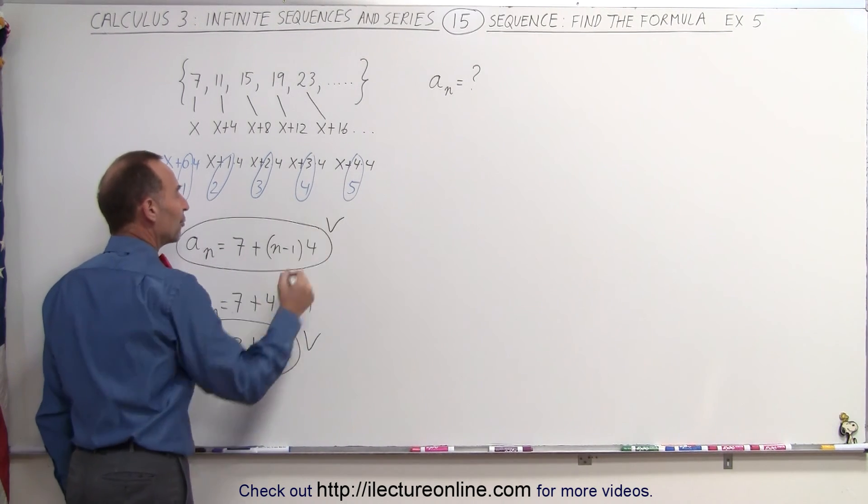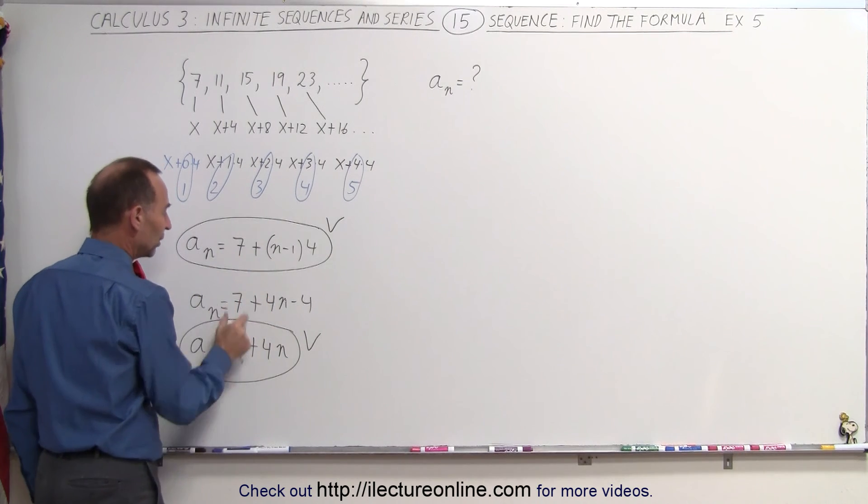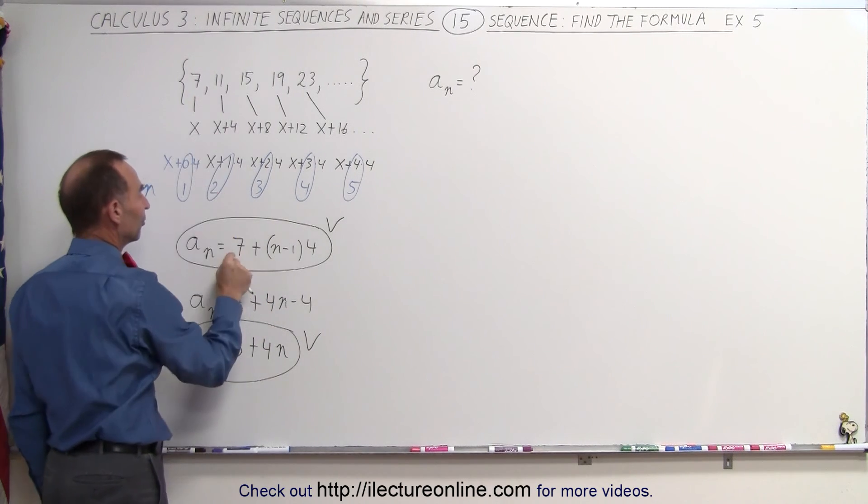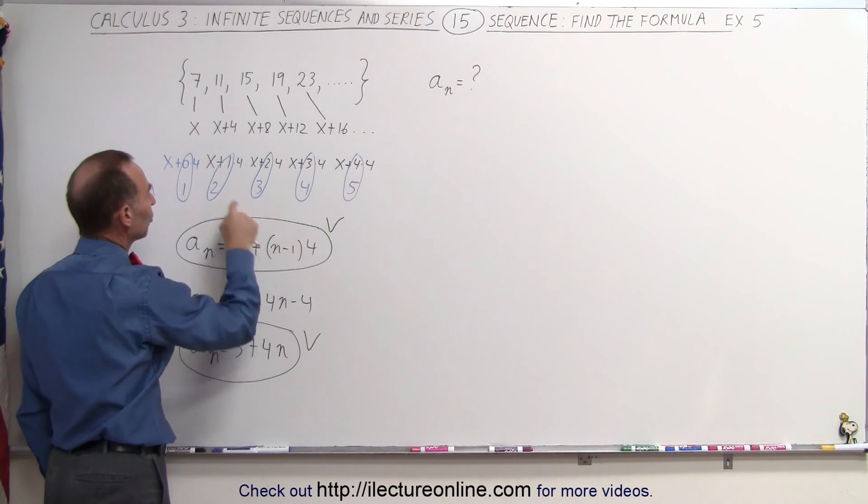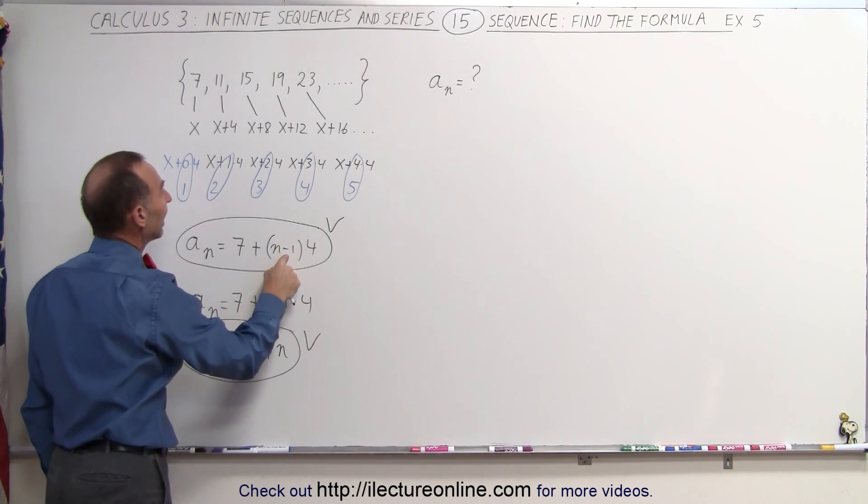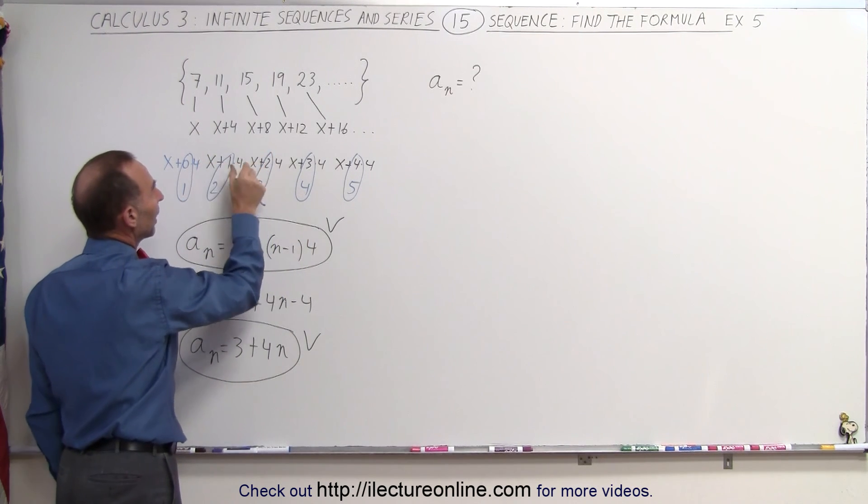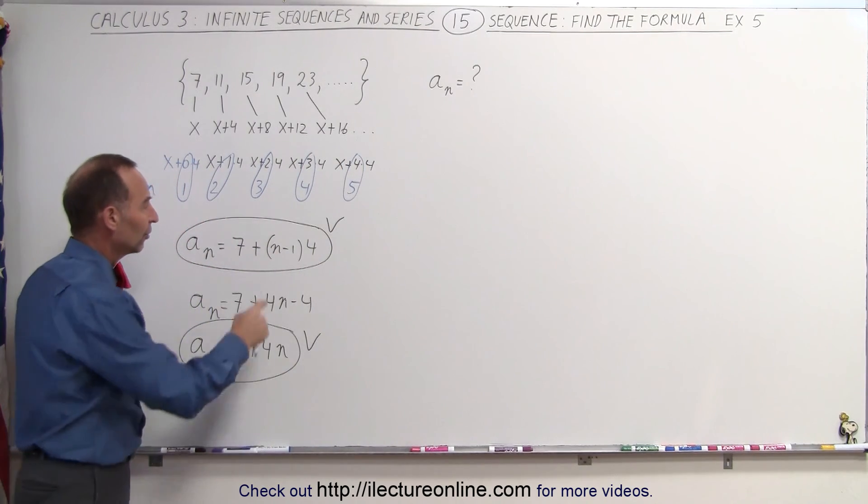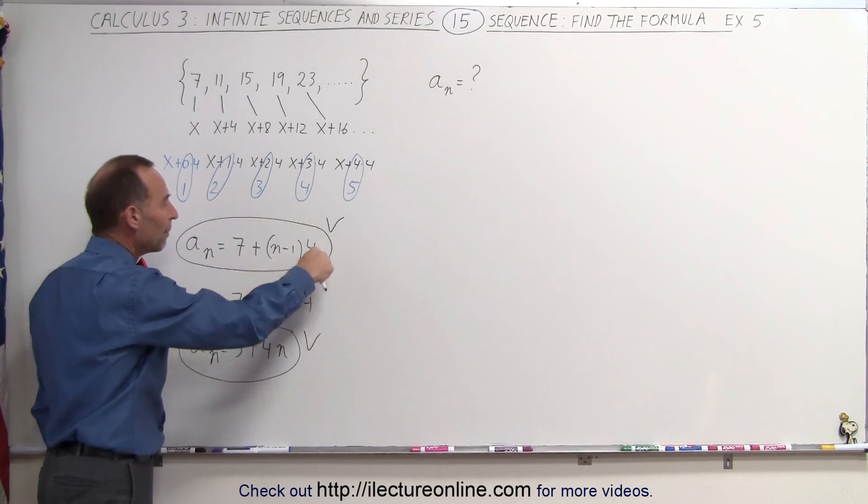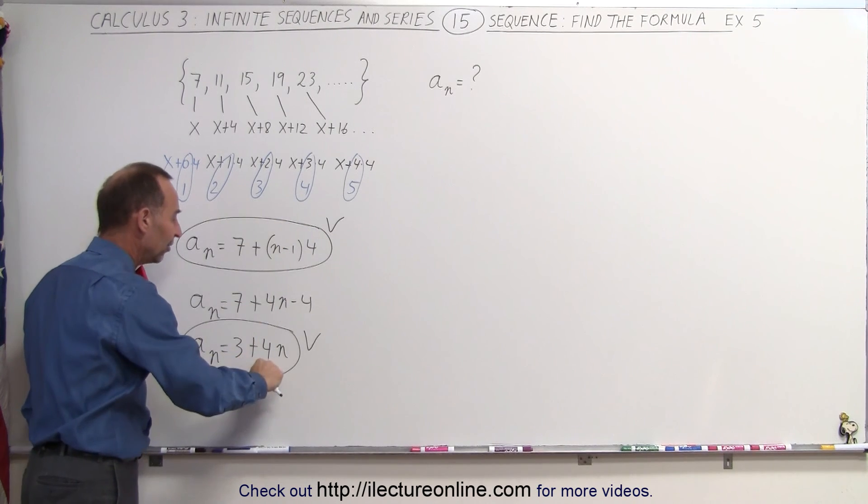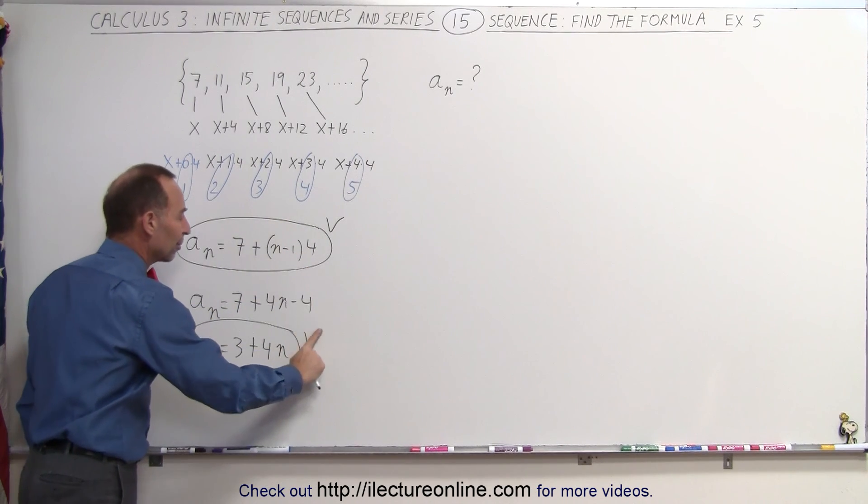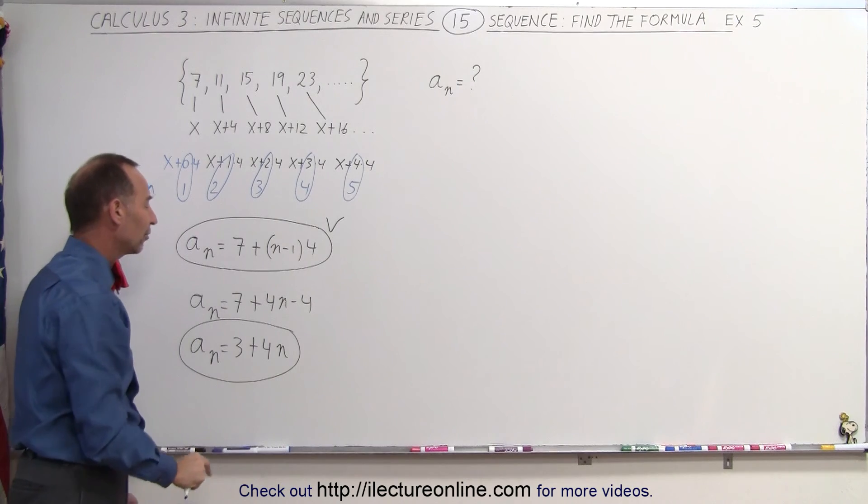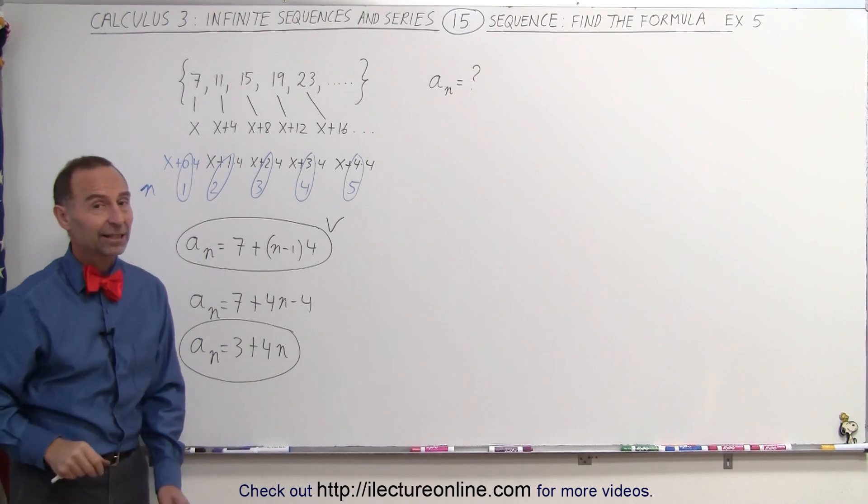But this is the better way of writing it, because it does show the offset being 7, being the first number, and then the relationship between the value of n and the value of the number that would multiply by the constant difference between each of the sequence numbers. So this reveals more about the format of the sequence than this does. So this is the superior way of writing the answer, even though that is technically also correct.